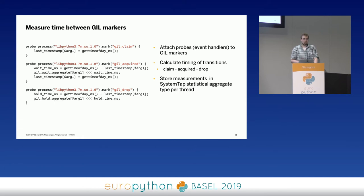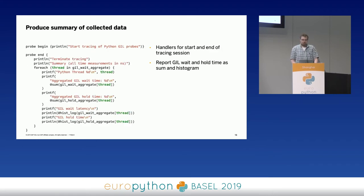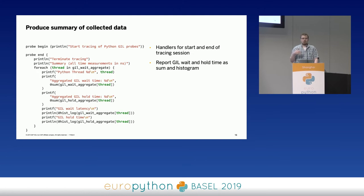We do the same for the GIL drop, allowing us to calculate how long we actually held the GIL. Now that we're calculating these numbers, we'd like to print them out in some kind of report. We can use handlers invoked at the startup and termination of the SystemTap tracing session — when the tracing session stops, we print out debugging information and a summary of all measured threads with their respective timings.